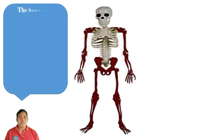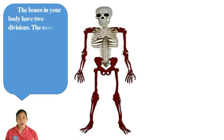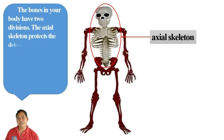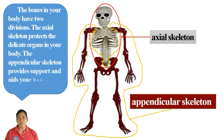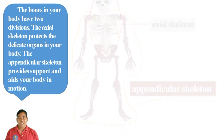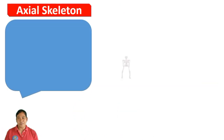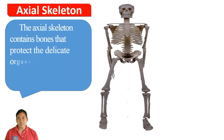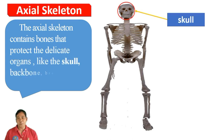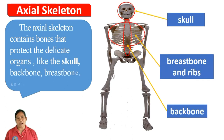The bones in your body have two divisions. The axial skeleton protects the delicate organs in your body. The appendicular skeleton provides support and aids your body in motion. The axial skeleton contains bones that protect delicate organs — like the skull, backbone, breast bone, and ribs.